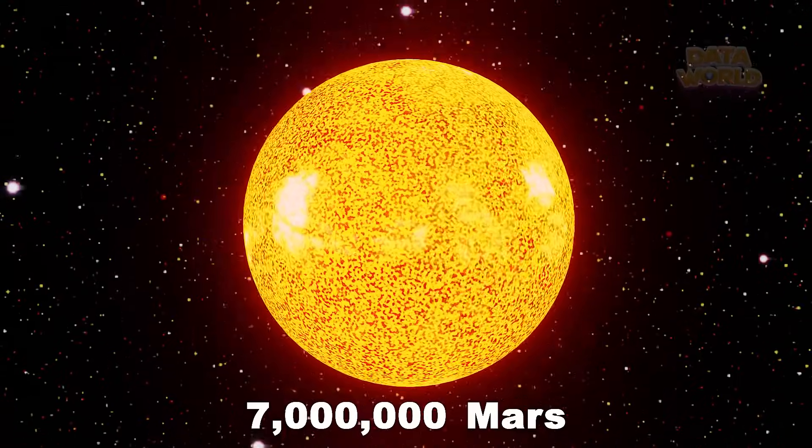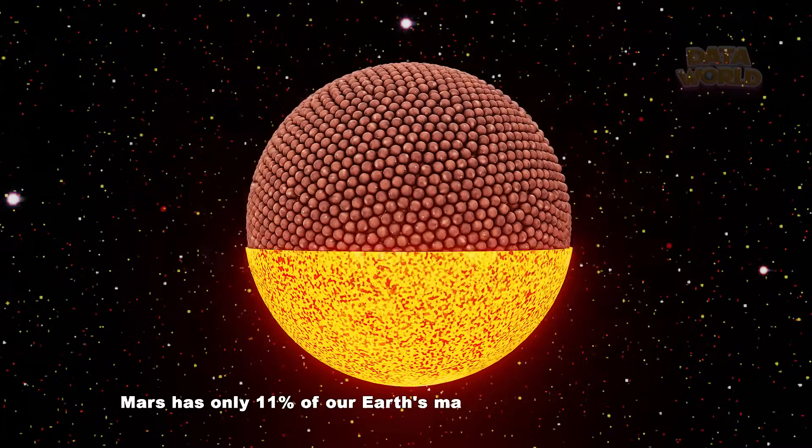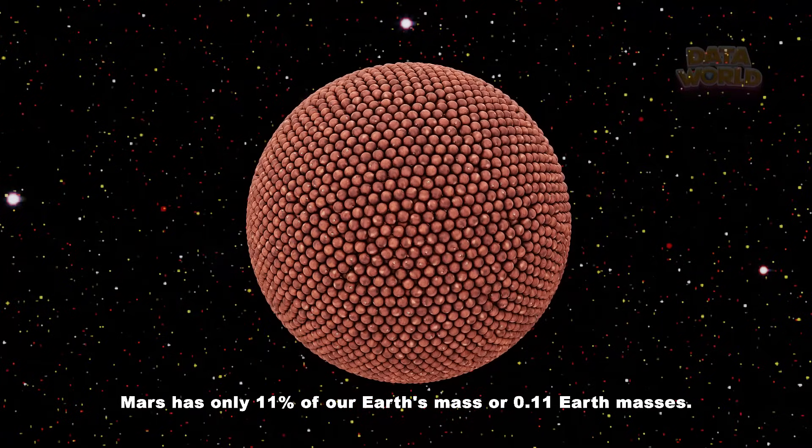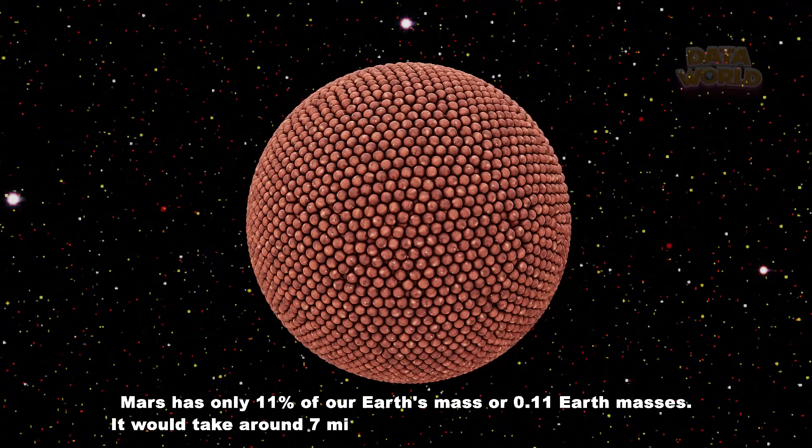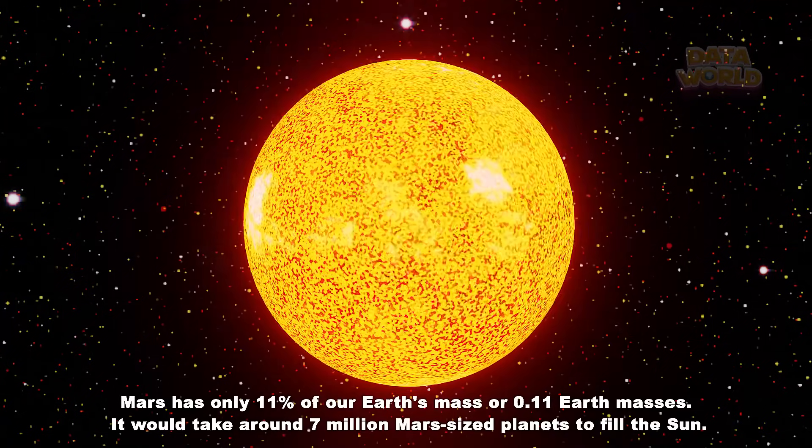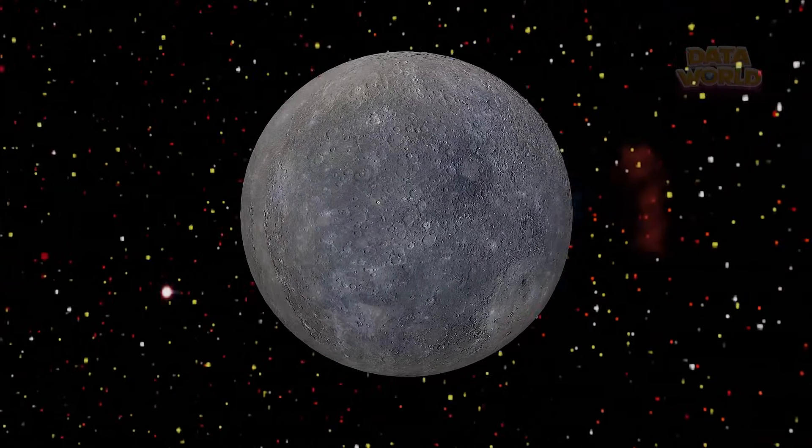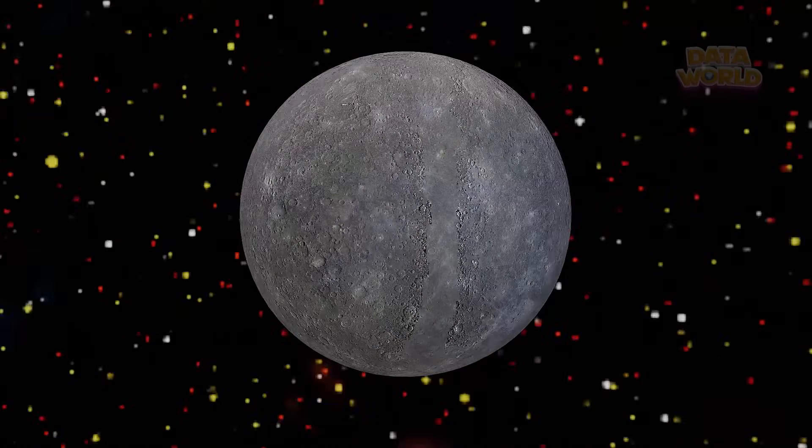7 Million Mars. Mars has only 11% of our Earth's mass or 0.11 Earth masses. It would take around 7 million Mars-sized planets to fill the Sun.